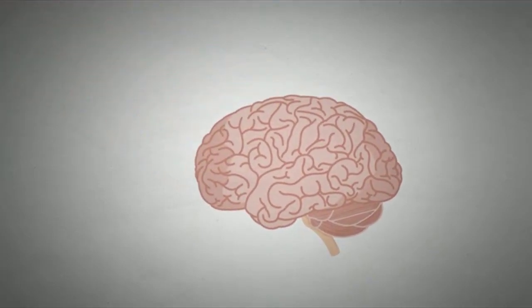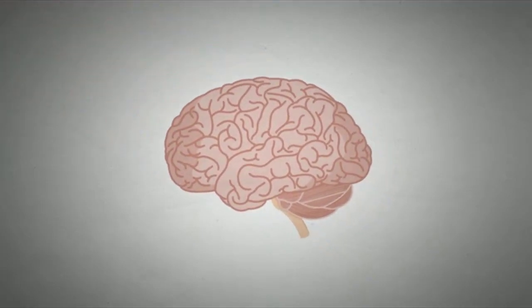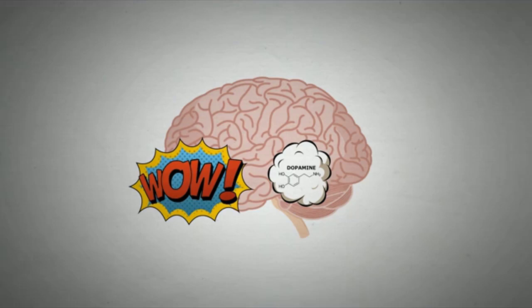Our brains are wired to ensure that we will repeat life-sustaining activities. It does this by releasing dopamine. Dopamine is the 'hey, that's fantastic, we should do this again' neurotransmitter.